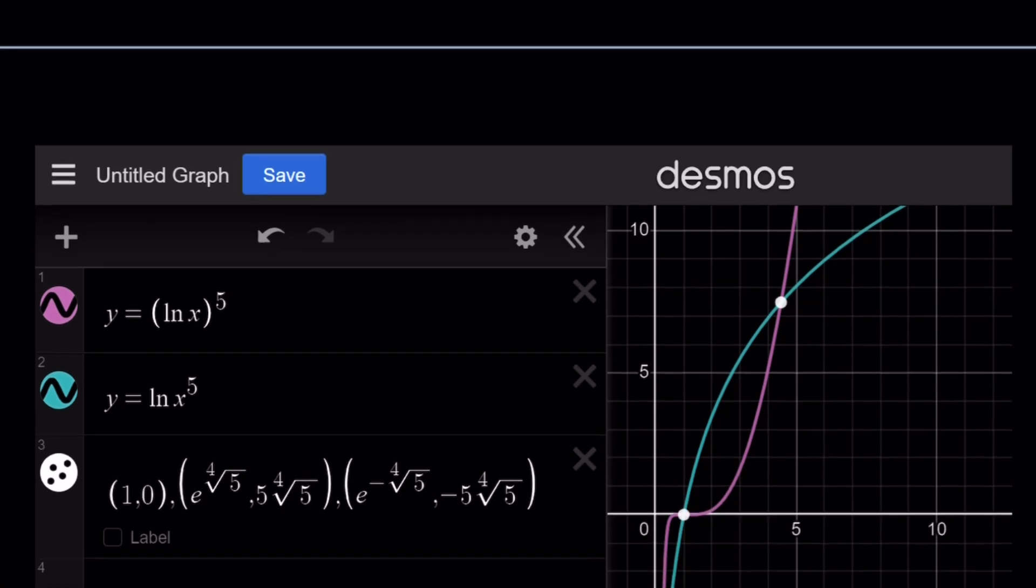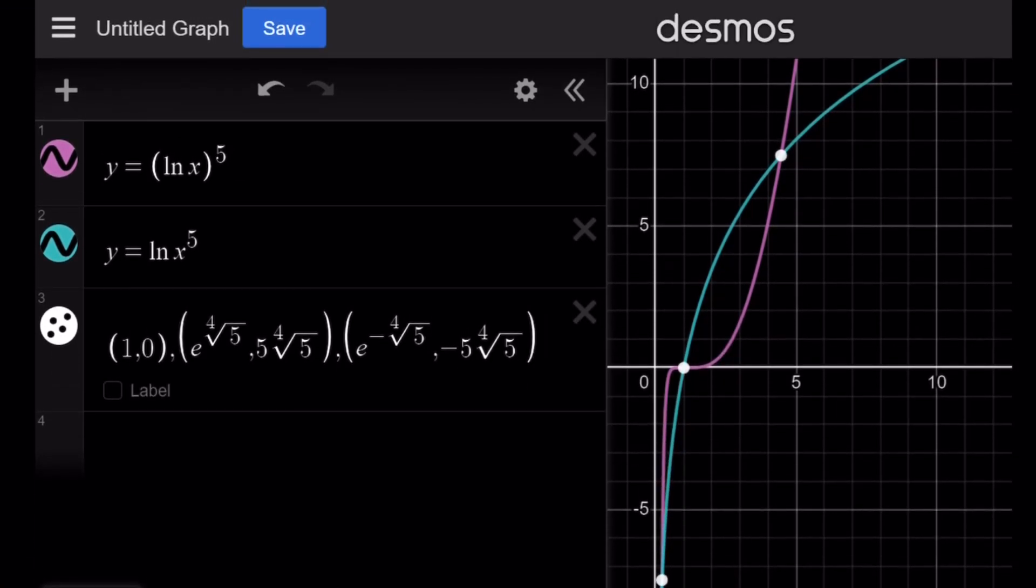Alright, great. So we have the graph of ln x to the 5th power, which is the purple one. And the other one, which is I think blue, is ln x to the 5th power.